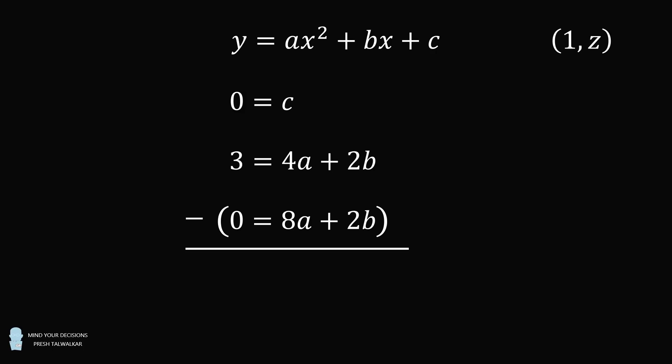3 is equal to negative 4a, which means a is equal to negative 0.75. We then take this and substitute into this equation. So we get that 3 is equal to negative 3 plus 2b. We simplify this equation and then solve for b. b is equal to 3.